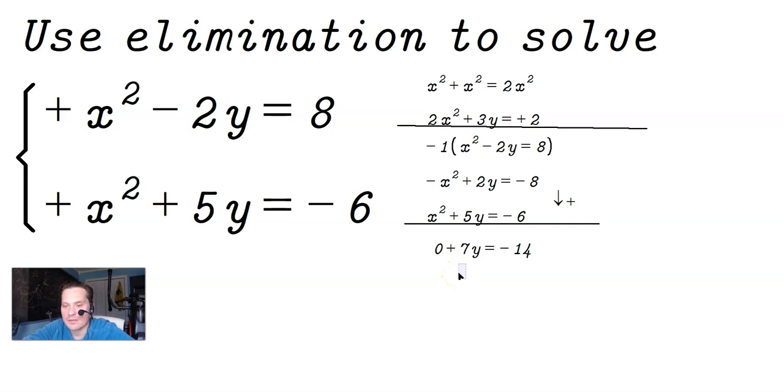So now divide by 7. So 7y divided by 7 is equal to negative 14 divided by 7. So you end up with y being equal to negative 2.